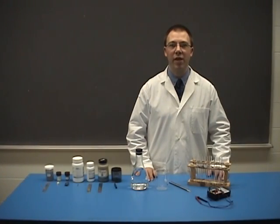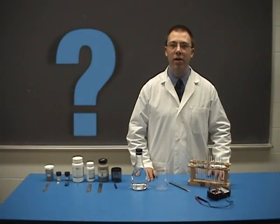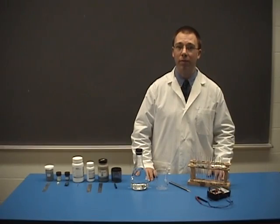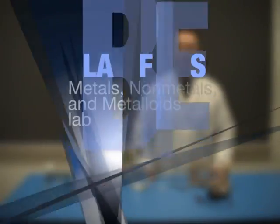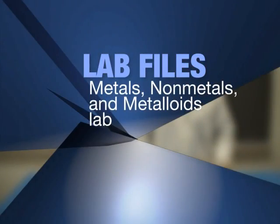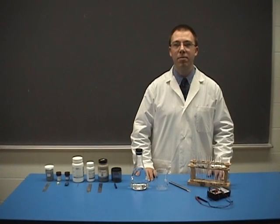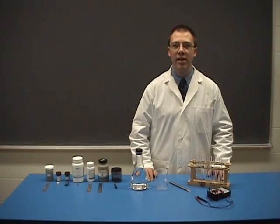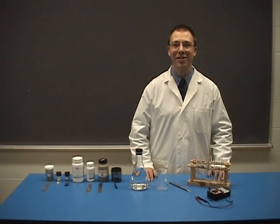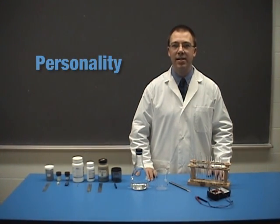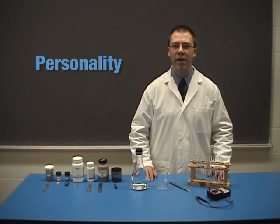Substances on the periodic table of the elements that share common traits can be grouped together. But how can we determine which elements belong to which group? A characteristic property is a distinctive trait that helps identify a substance. We can think of a characteristic property as its personality, since it helps us to distinguish it from the other elements.